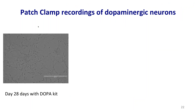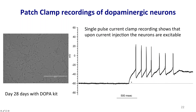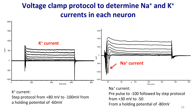Another example is traditional patch clamp recording, specifically of dopaminergic neurons. This is a culture generated from neural stem cells after 28 days of differentiation with a dopamine kit. We record action potentials by patch clamping, including voltage-clamp experiments to determine sodium and potassium currents in individual neurons. This is the general electrophysiological characterization we have done with collaborators.